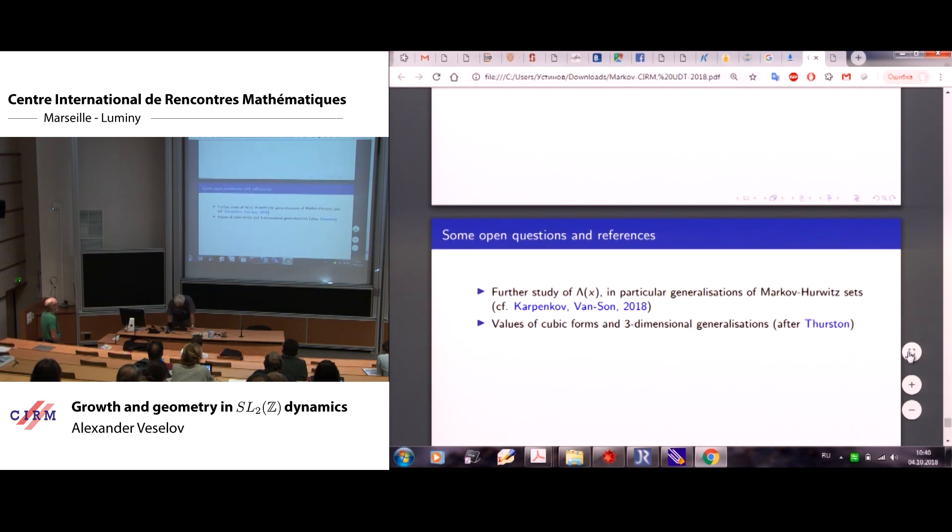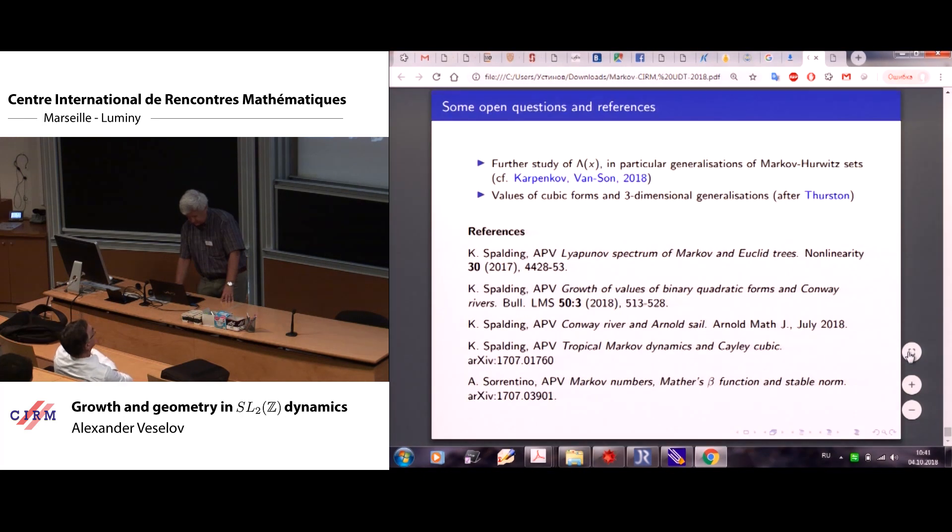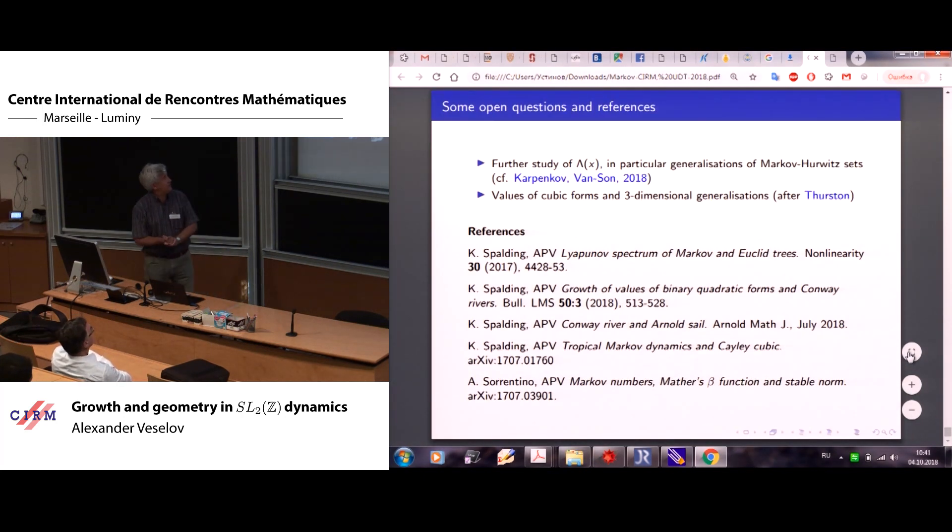I'm very sorry that it's taken longer. So I think study of this lambda of x is very important function, no doubt. But it's not clear how to study such a function which is nowhere continuous. The only thing I can think of is generalization of Markov-Hurwitz theory. And there are some candidates in recent Alec's paper with Wan-Soon. And another, what I'm thinking personally at the moment, is interested in three-dimensional generalization related to cubic forms. Just some references which I should refer. That is joint work with Katie and Alfonso. Thank you very much.